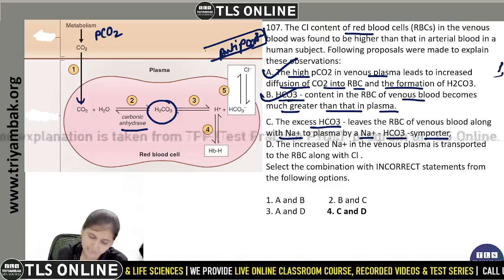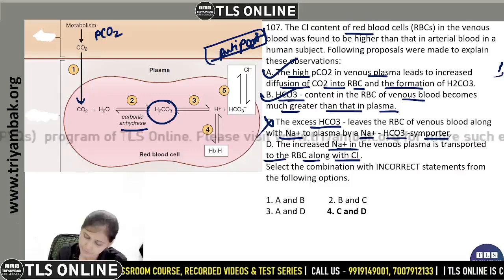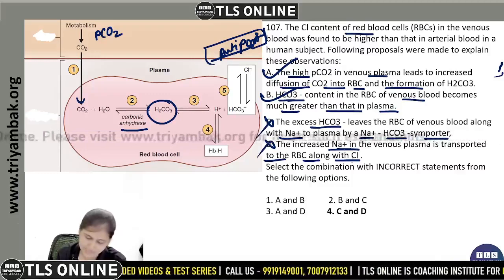Statement D: the increased sodium in the venous plasma is transported to the RBC along with chloride — No. Increased sodium is not transported with chloride into the RBC. So statement D is also incorrect. Select the combination of incorrect statements: C and D. That's why the fourth option is correct.